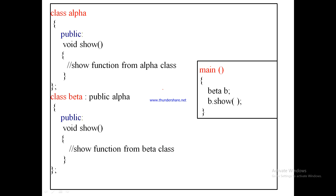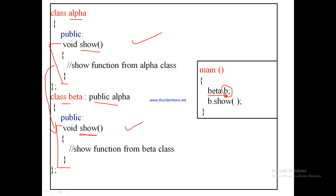Now for virtual functions, let's first look at a simple program. We have a base class alpha containing one member function show. We also have a derived class that inherits properties from the base class and also has a function named show. So the show function is available in both the base class and the derived class. In the main function we create an object of the derived class: beta b, where b is the object of the derived class.